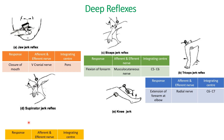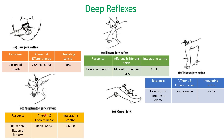The next one is the supinator jerk reflex. With a reflex hammer, we'll strike at the supinator position. The response is supination and flexion of the forearm — again, bending of the forearm.